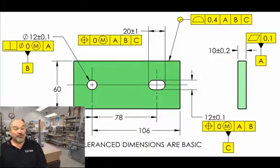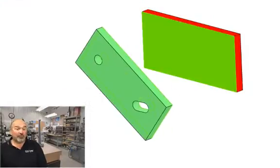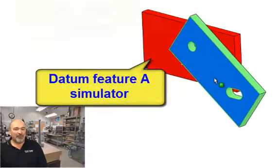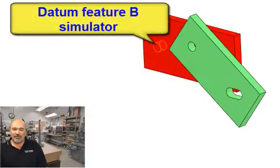First, datum feature A is brought in contact with its simulator. The simulator for datum feature B is the largest cylinder kept perpendicular to the first datum plane that will fit the hole, which is datum feature B.